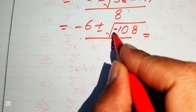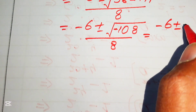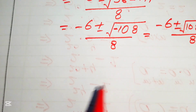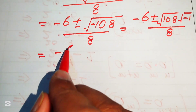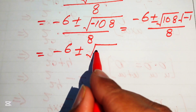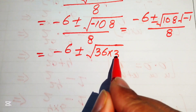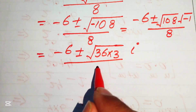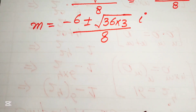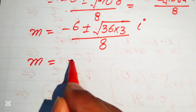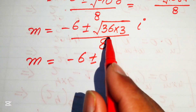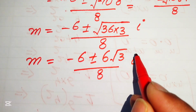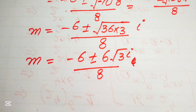We separate the radical: √(−108) = √108 · √(−1). Writing 108 = 36 × 3 and using √(−1) = i, we get √108 = 6√3. So the expression becomes m = (−6 ± 6√3 · i) / 8.